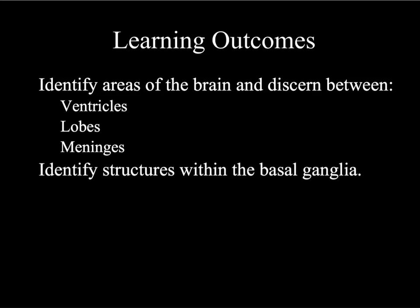Today's learning outcomes — what I'd like you to be able to do by the end of today is to identify different areas of the brain, basically discerning between the different ventricles, the different lobes, which can sometimes prove a little bit tricky, and also identifying the meningeal structures, the more common ones you'll likely see. The meninges is essentially split into three different layers: the pia mater, which is the innermost layer, the arachnoid mater, and also the dura mater. It's the dura mater that splits the hemispheres and also differentiates between the cerebrum and the cerebellum. We're also going to be looking at the structures that reside within the basal ganglia.